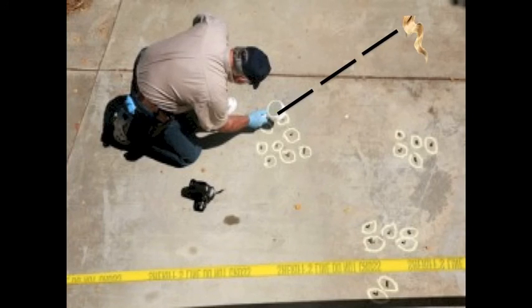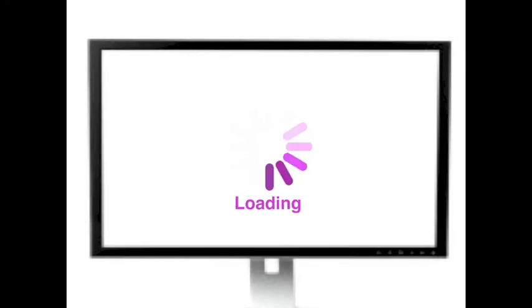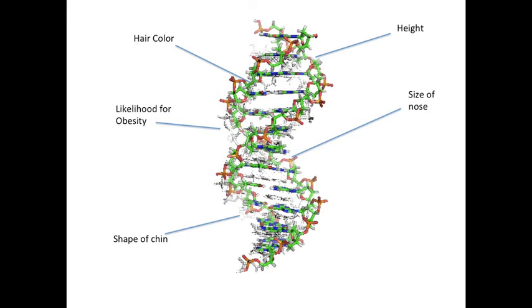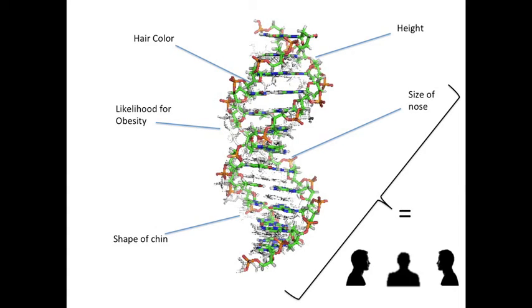Instead of analyzing it to see if there's a person in their computer system to match it, maybe the investigators could use the hair itself to find out where it came from. They could look at all of the various SNPs in the genome to determine who exactly left the hair at the crime scene—how tall they are, what kind of hair they have, how likely they are to be obese, how big their nose is, the shape of their chin, and a million other characteristics that would lead the police directly to the culprit.